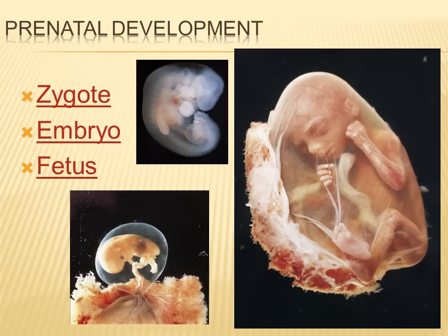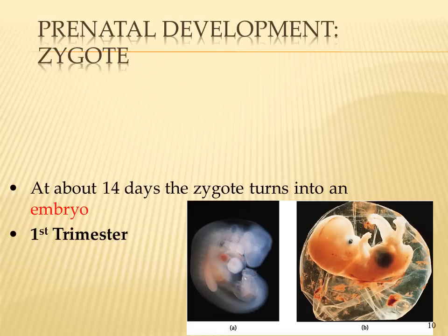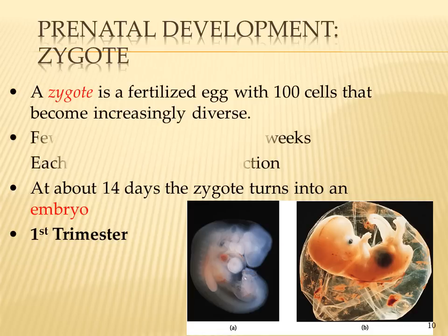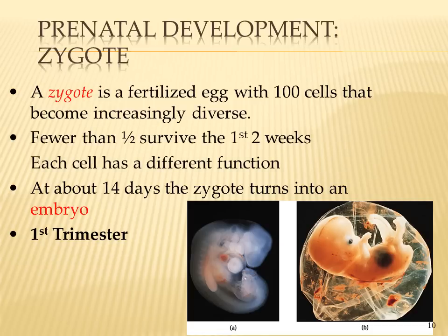Once fertilized, the egg goes through three stages: it first becomes a zygote, then transitions into an embryo, and finally a fetus. The zygote is the fertilized egg containing hundreds of cells that become increasingly diverse. Fewer than half of all zygotes survive the first two weeks.